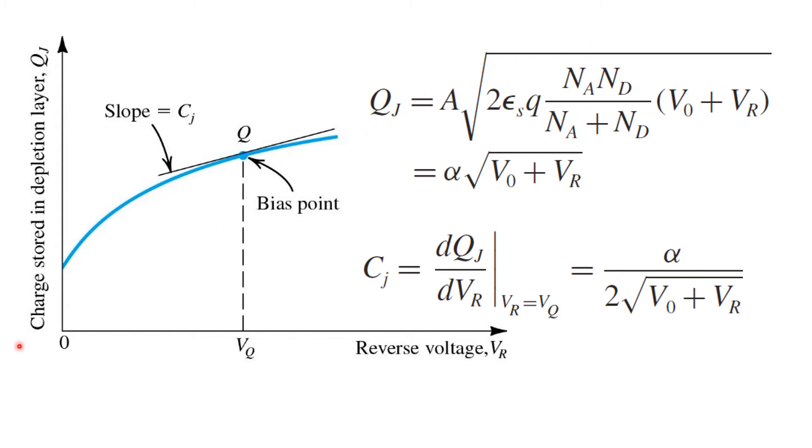Now, the capacitance of a normal linear capacitor is determined by the slope of the charge voltage relationship. Similarly, we can define the effective capacitance of the reverse bias P-N junction as being the slope of this curve. The problem is that the slope changes depending on the precise bias voltage applied.